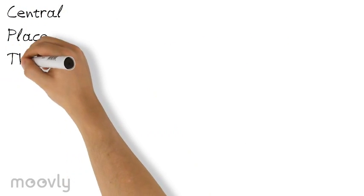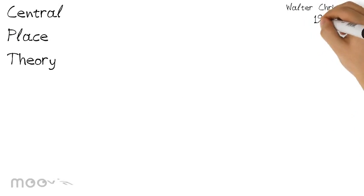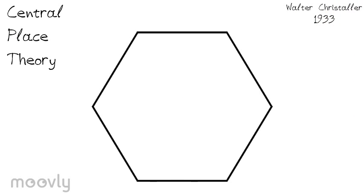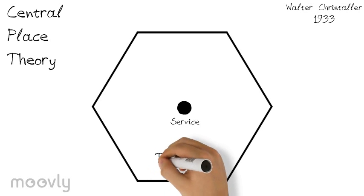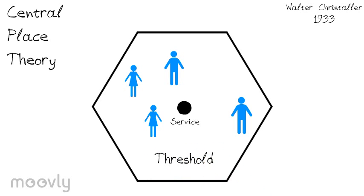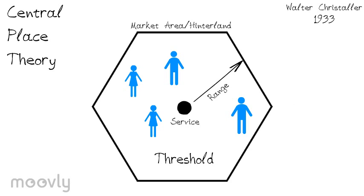The central place theory is a model created by Walter Christaller in 1933. The model is in the shape of a hexagon to make sure that no space is left untouched. The central place in the middle is the source of service. The threshold is the number of people needed to support the service, and the range is how far a service can stretch out. The market area, or hinterland, is the boundary line for the service. Christaller came to two conclusions: towns of the same size are evenly spaced because they are in the center of congruent market areas, and towns are part of an interdependent system, so if a central place is eliminated, the entire system readjusts to fill up the hole.